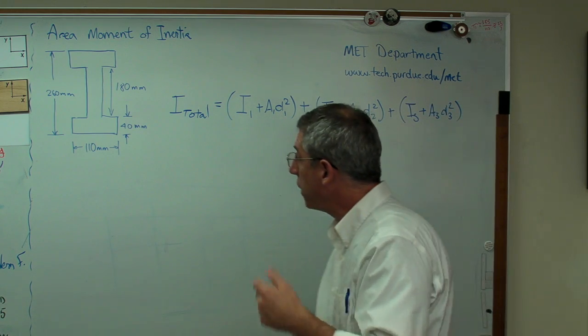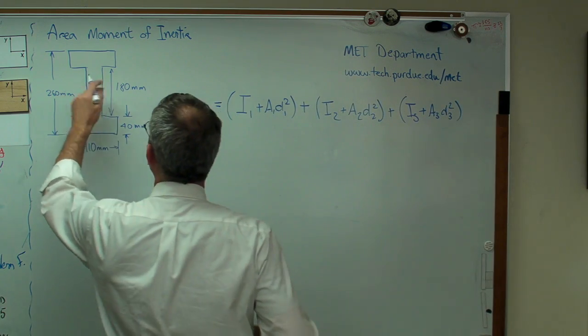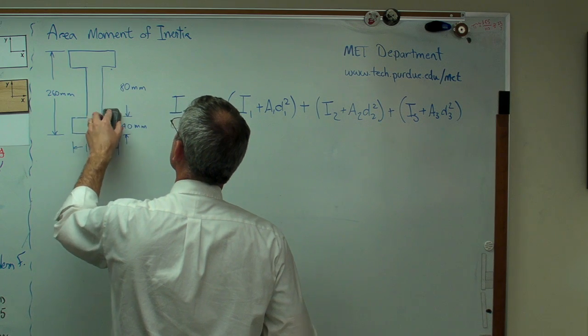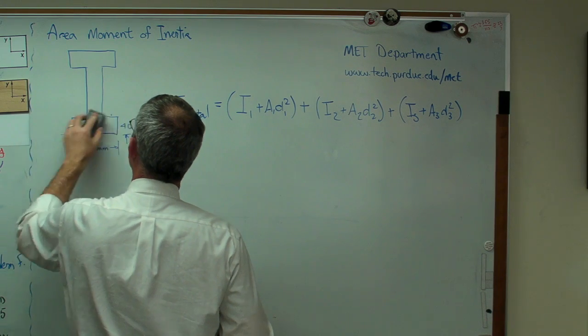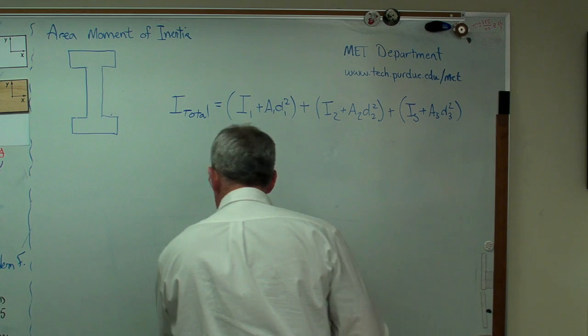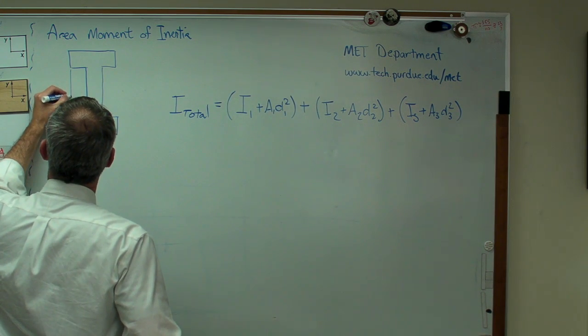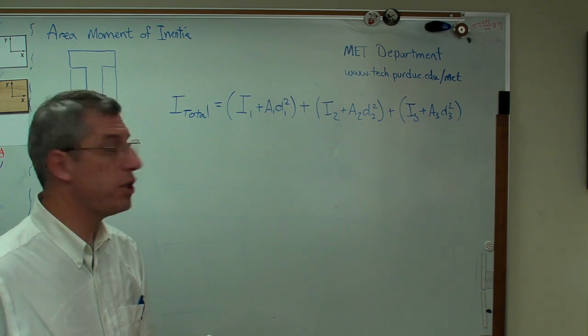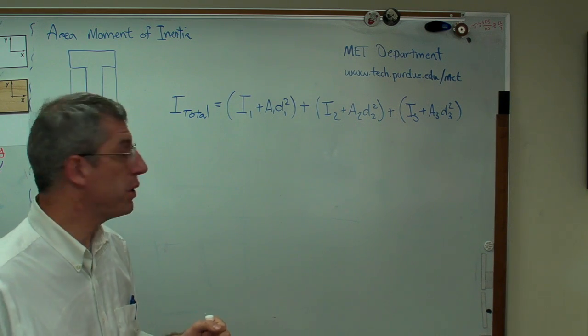Let's start by looking at the negative area method. We know what those dimensions are. So we've got just the I-beam now. With that negative area method, let's pretend that's the entire shape now, 110 millimeters wide, 260 millimeters high.